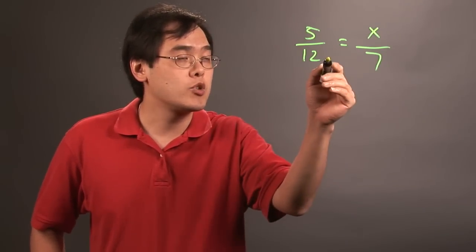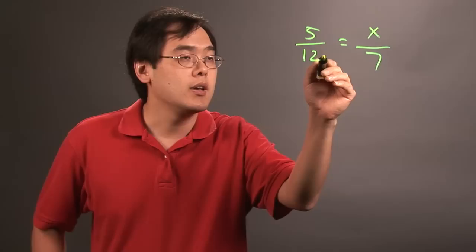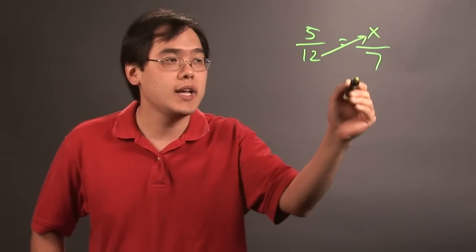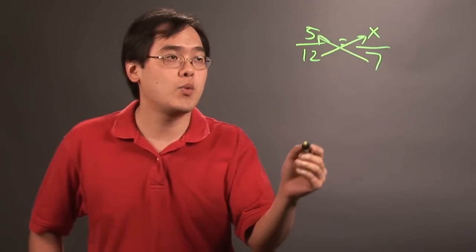So just as a reminder, what you want to think about in cross multiplication is the denominator of one side is going to multiply with the numerator of the other side, and it goes the other way around as well. So at this point,